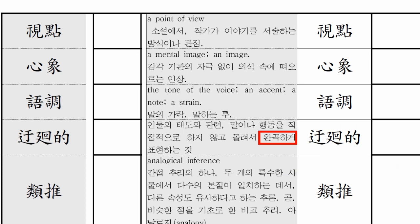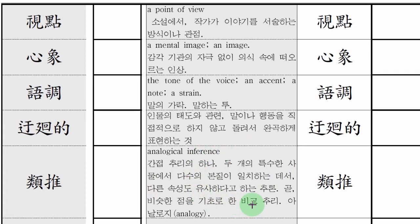그 다음에 유추. 유추 뜻이 뭐야? 간접추리의 하나. 두 개의 특수한 사물에서 다수의 본질이 일치하는 데서 다른 속성도 유사하다고 하는 추론. 곧 지식한 점을 기초로 한 지식추리, 아날로지. 유 자는 종류할 때 유 자야. 무리 류. 추 자는 밀 추 자니까 같은 종류로 밀어나가는 거니까 유추.